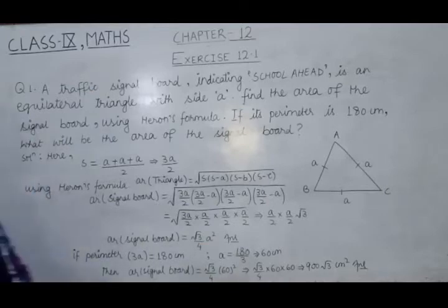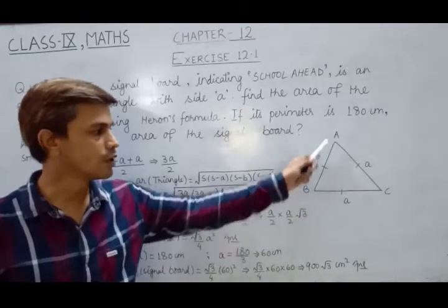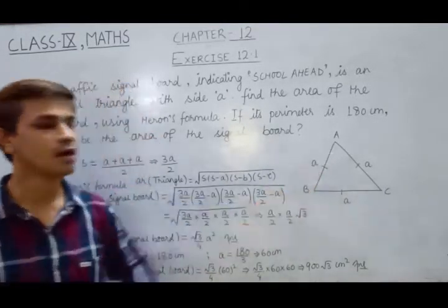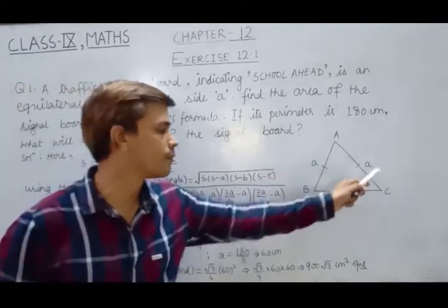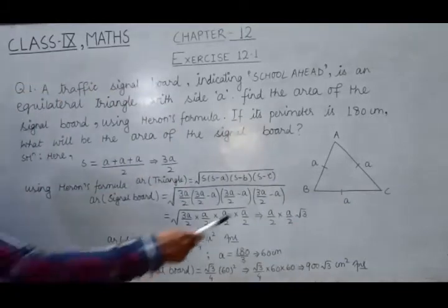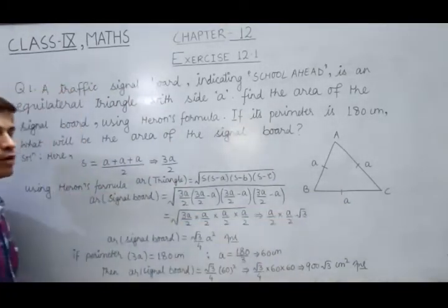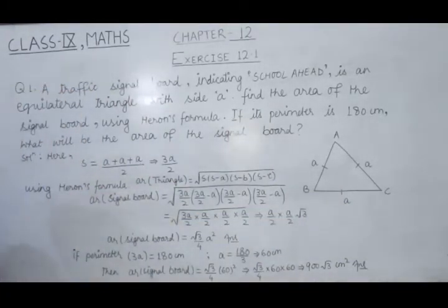So let's start with its solution. This time we are given a signal board in the shape of an equilateral triangle. We have measure of all 3 of its sides. We have small a. In order to find its area using Heron's formula, we must calculate semi-perimeter s at first.